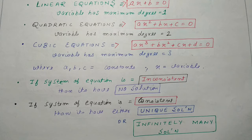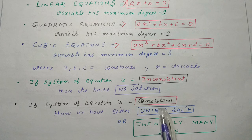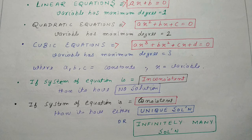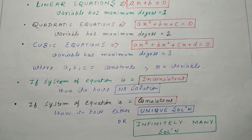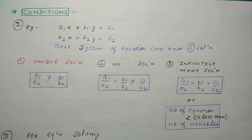अब बात करते हैं system of equations के solution की। जब भी आप system of equations के solution की बात करते हैं, तो उसके 2 categories हो सकती हैं - inconsistent और consistent। Consistent की category में दो parts आते हैं: unique और infinitely many solution। Inconsistent के under एक solution आता है - no solution। Overall, system of equation के 3 solutions होते हैं: no solution, unique solution, और infinitely many solution।